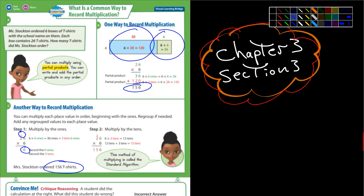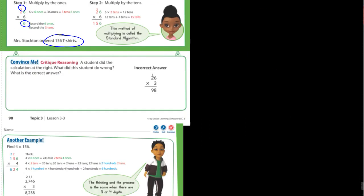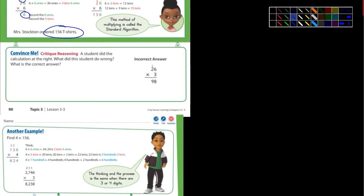And then you get 156 t-shirts. And so they just break it down in box C here on how to do that. And I think most of you know how to do that. The convince me, sharpen your pencil later. Thank you.